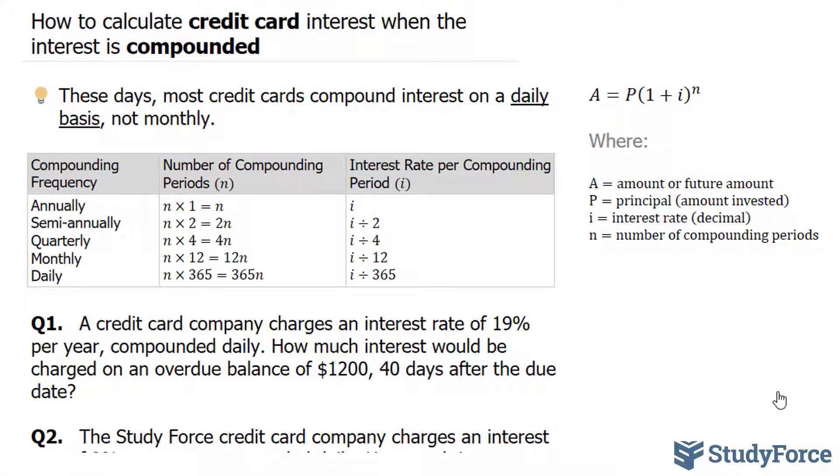To calculate this amount, we'll use this formula and we need to define each of these letters. So we're told that it's 19% interest compounded daily.